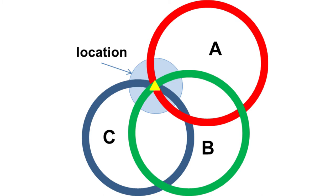So with 3 satellites in a Venn diagram, we have 3 circles intersecting. There are 4 satellites at that location. As the number of satellites increases, if you have more satellites in that circle, the accuracy of your location improves.